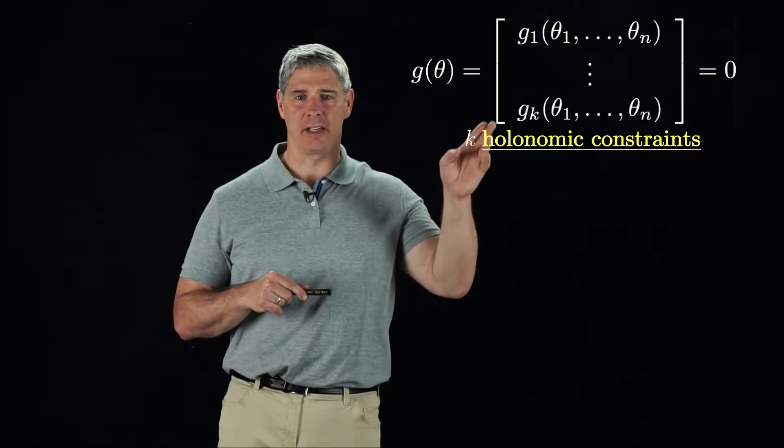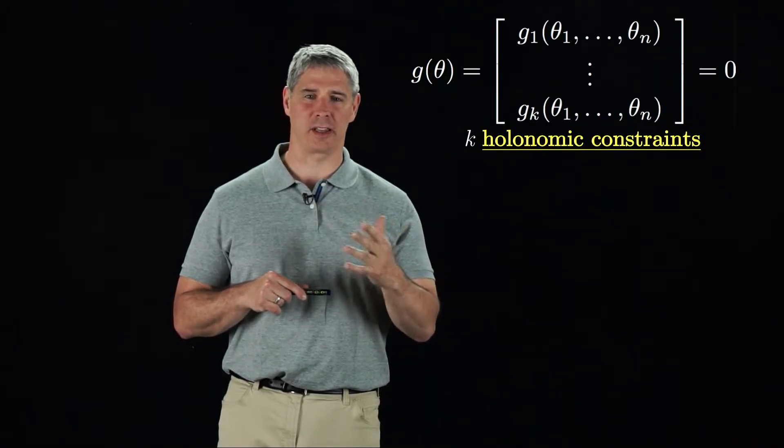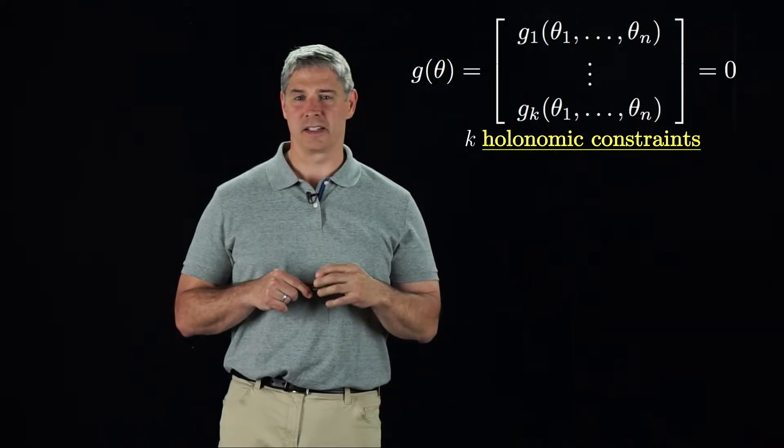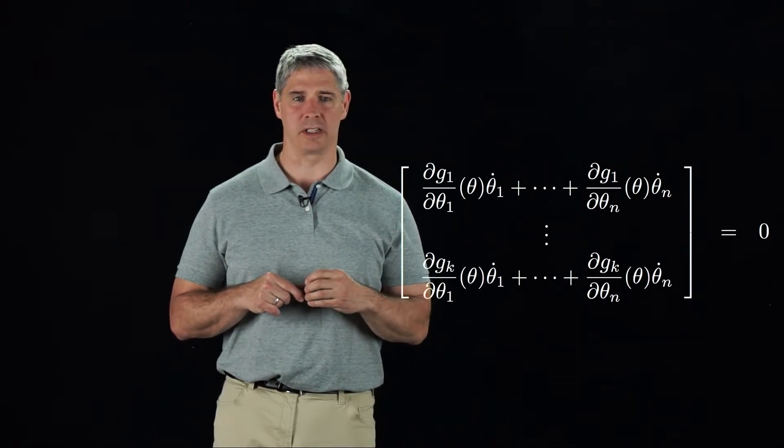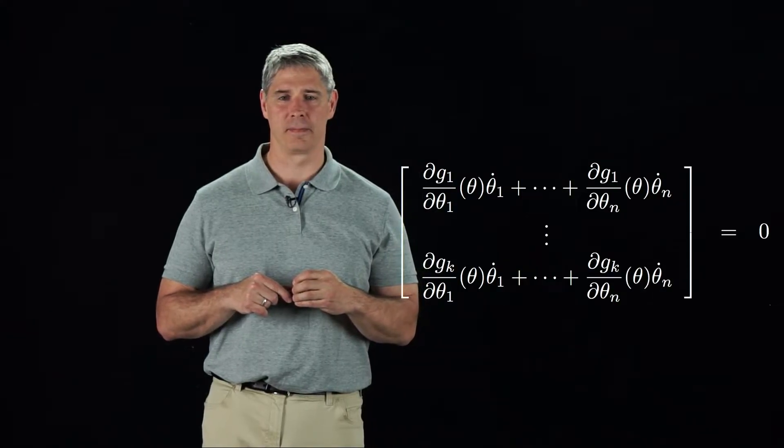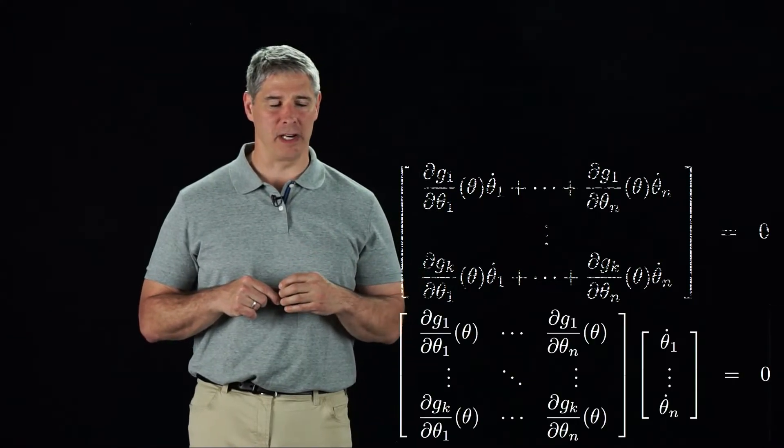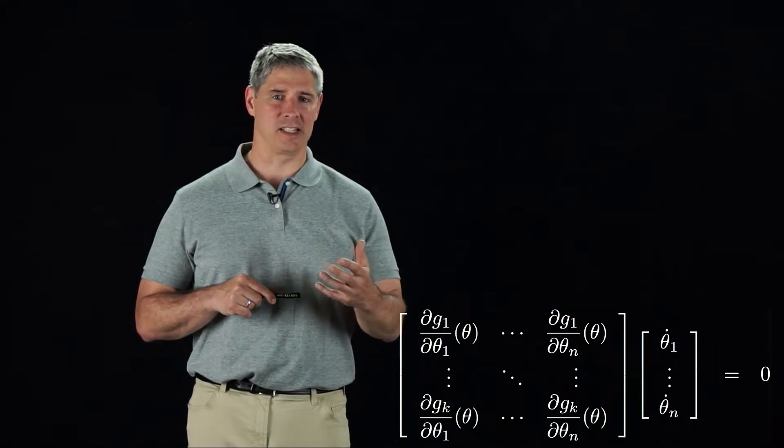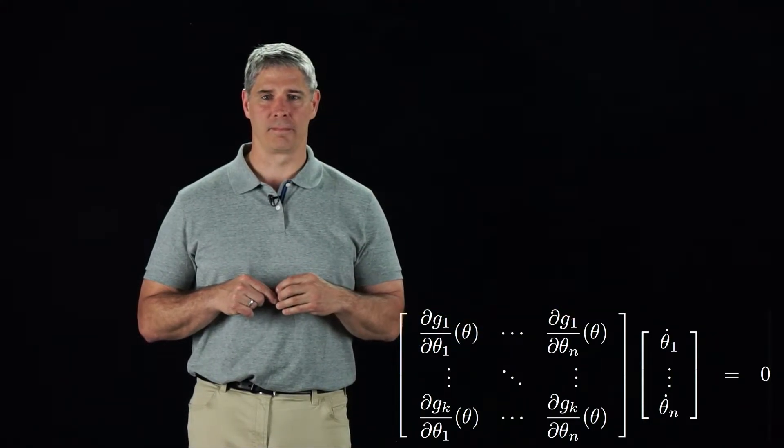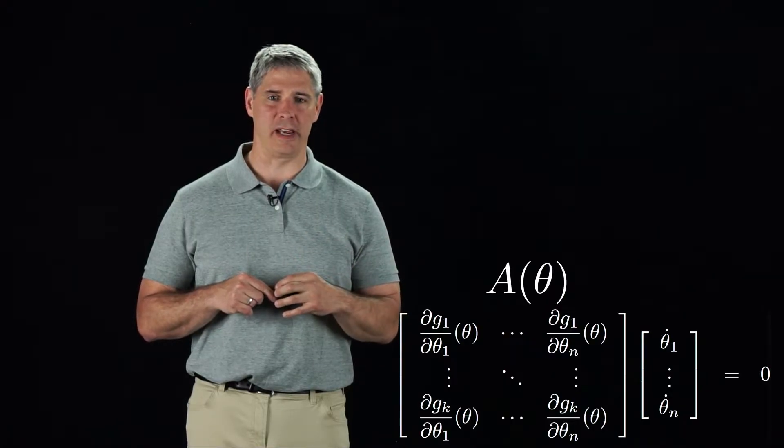If the robot is moving, we could ask how these holonomic constraints restrict the velocity of the robot. Since g of theta has to be zero at all times, the time rate of change of g must also be zero at all times. We can write these constraints as a matrix dependent on the configuration theta times the joint velocities theta dot equal to zero. If we call this matrix A of theta, we can write the velocity constraints as A of theta times theta dot equals zero.